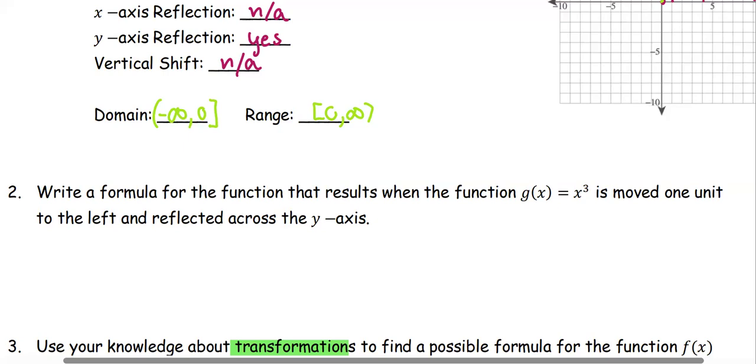Number two: write a formula for the function that results when the function g(x) = x³ is moved one unit to the left and reflected across the y-axis.